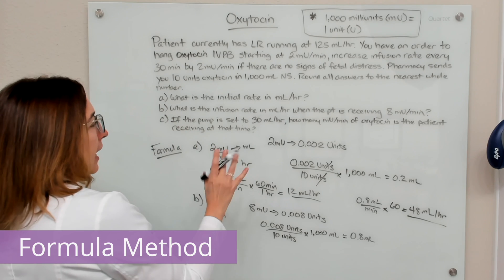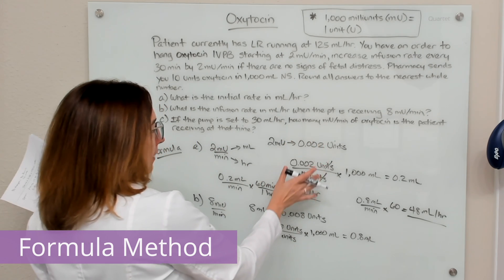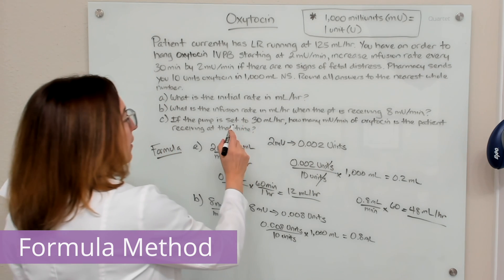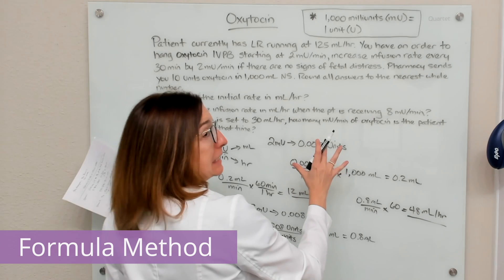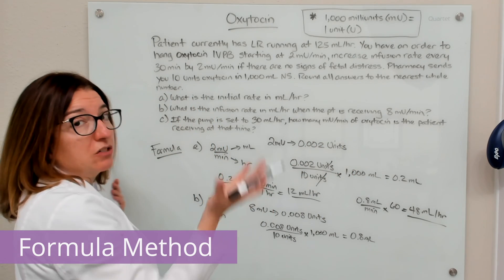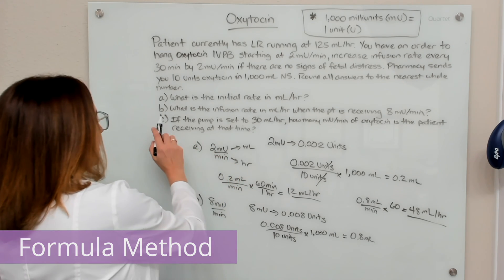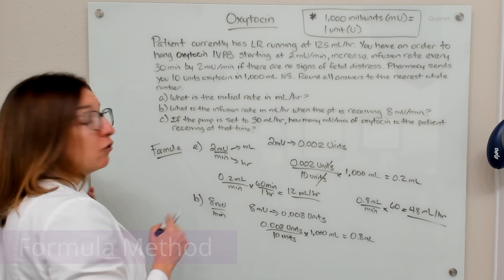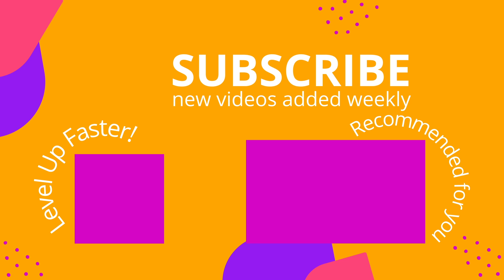Because the formula method requires desired over have times vehicle, there is not a way to solve part C where that makes sense. You'll need to use either dimensional analysis or ratio and proportion to solve part C. We invite you to subscribe to our channel and share a link with your classmates and friends in nursing school. If you found value in this video, be sure to hit that like button and let us know what you found to be particularly helpful.